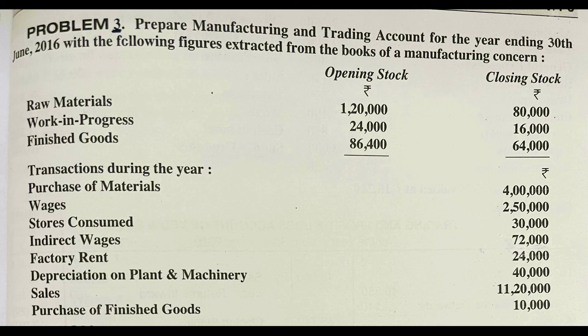Transactions during the year: purchase of materials 4 lakh rupees, wages 2 lakh 50,000, stores consumed 30,000, indirect wages 72,000, factory rent 24,000, depreciation on plant and machinery 40,000, sales 11,20,000, purchase of finished goods 10,000 rupees.